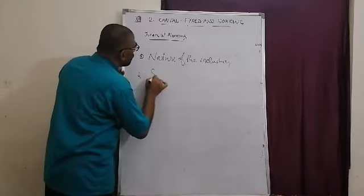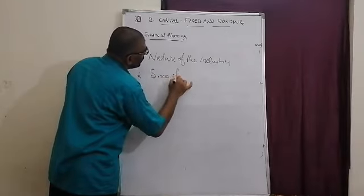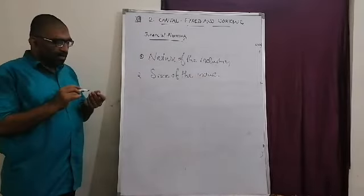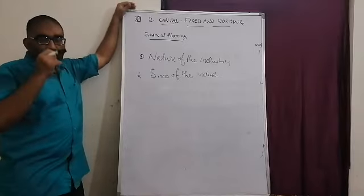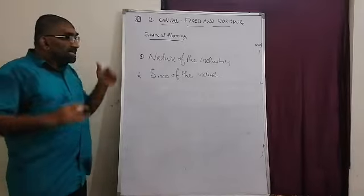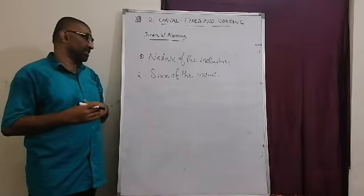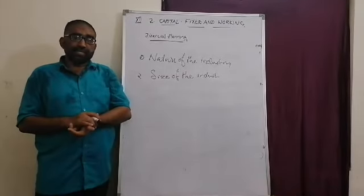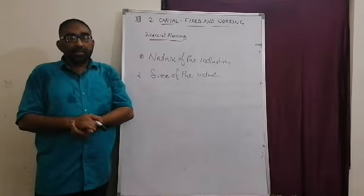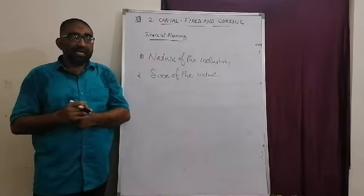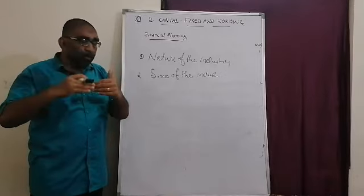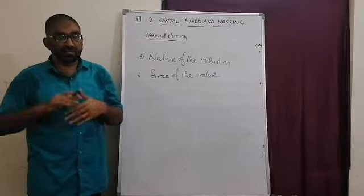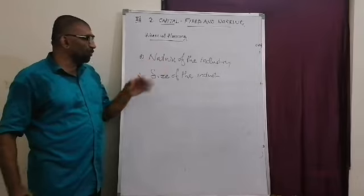The second factor is the size of the industry. A large industry in steady growth needs more capital funds. Other factors also include the past record of the industry, the credit standing, the reputation and attitude of management, and the degree of risk the enterprise wants to assume. All these determine the financial needs and financial planning.